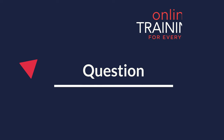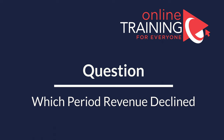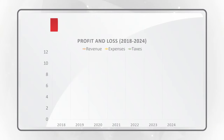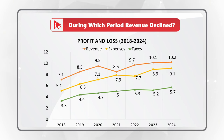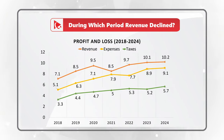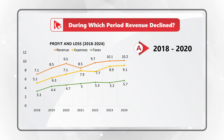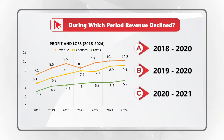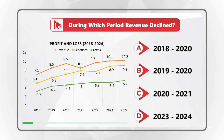Here is a rather unexpected question you might see on the test. You need to determine during which period revenue declined. You're presented with a profit and loss chart covering 2018 to 2024, with three lines representing revenue, expenses, and taxes. The four choices are: A — 2018 to 2020, B — 2019 to 2020, C — 2020 to 2021, and D — 2023 to 2024.